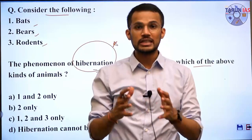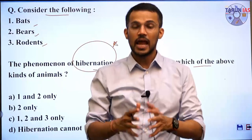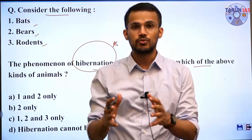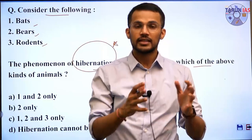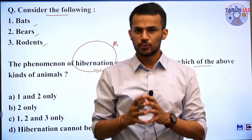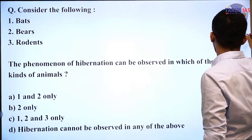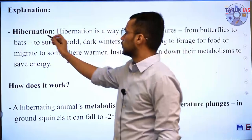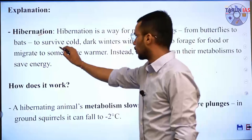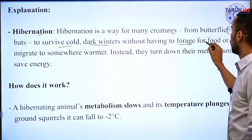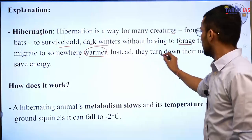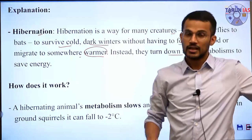Hibernation is a way for many creatures — from butterflies to bats — to survive cold, dark winters without having to forage for food or migrate. Instead, they turn down their metabolism to save energy. A hibernating animal's metabolism slows and its temperature plunges — in ground squirrels, it can fall to minus two degrees Celsius. Hibernating animals also exhibit slow breathing and production of natural antifreezes.